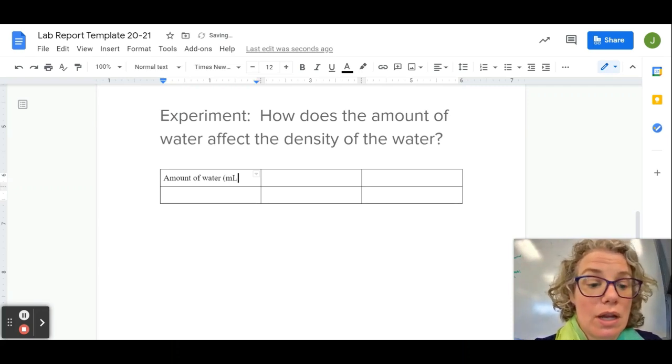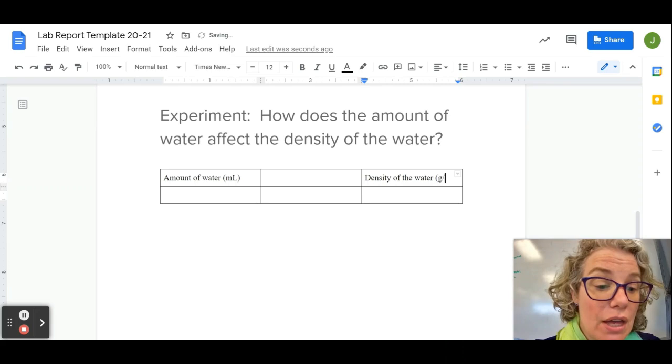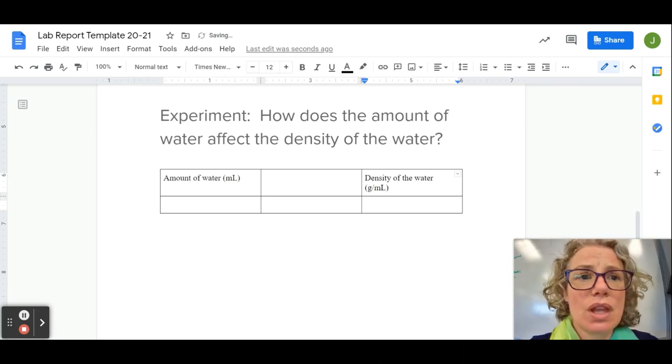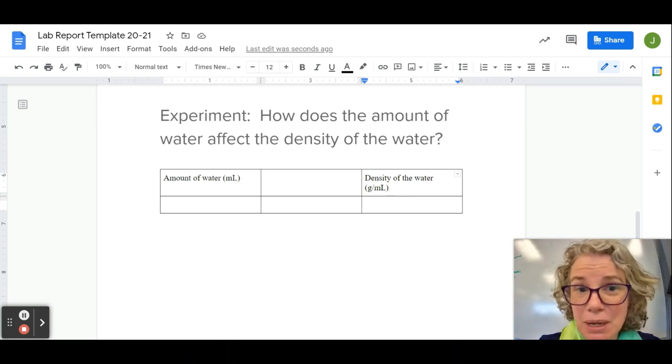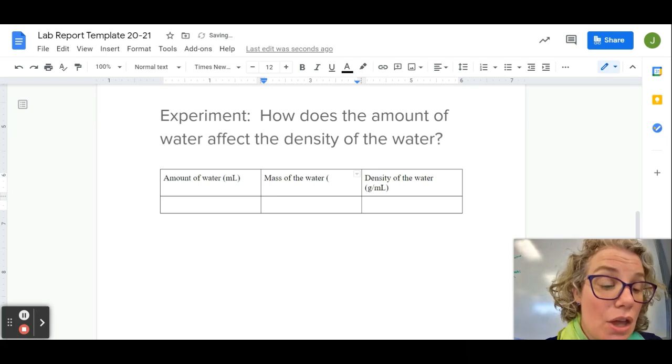My dependent variable is the density of the water, and the unit for that is grams per milliliter. In order to find the density, I would need to be able to also have the mass, because you'll notice the unit has grams in it. So I would need to find the mass of the water and record that in grams.